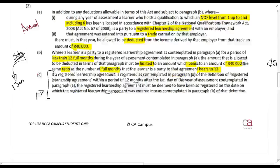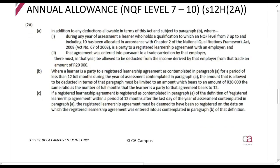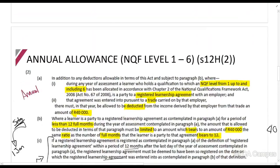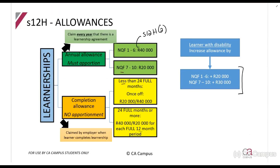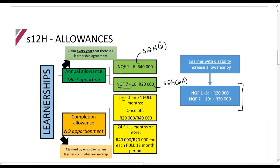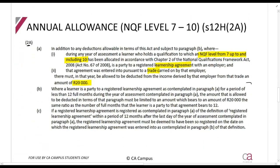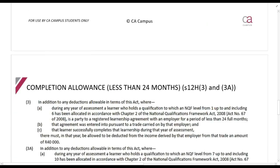Section 12H(2A) covers NQF level 7 up to 10 in a learnership agreement in the trade — the amount allowed to be deducted is R20,000. This is exactly the same rule as section 12H(2), just for the higher NQF levels. The apportionment rule applies in the same way. You'll see it's written exactly the same.